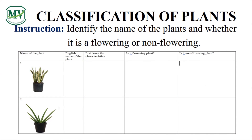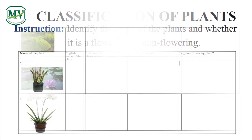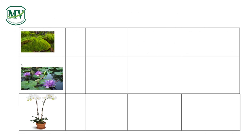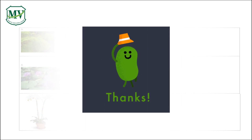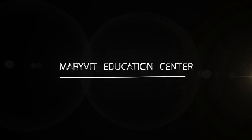Now, write the name of each plant. List down some characteristics and identify if it is a flowering or non-flowering plant. You can search some information on the internet. Bring your work on the first day of class. Thank you and see you in the next episode. Bye now, everybody!